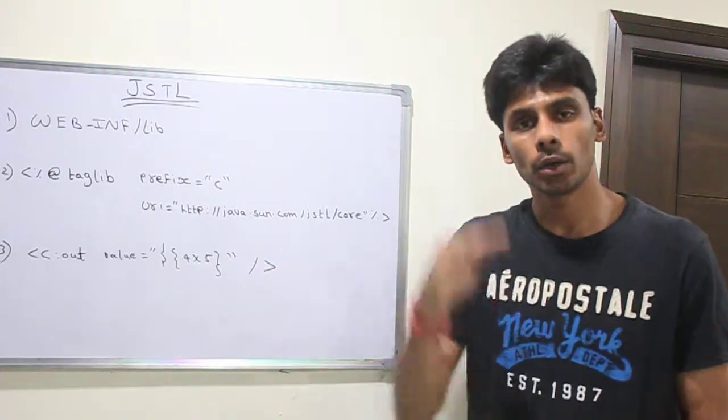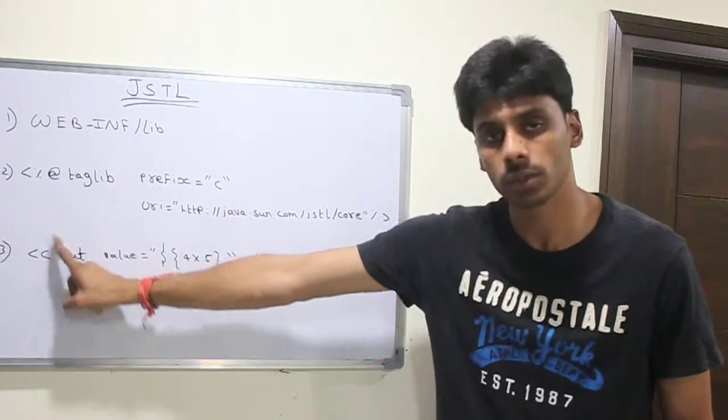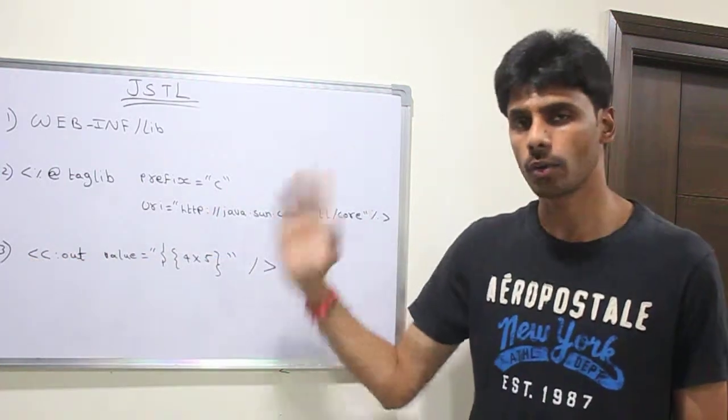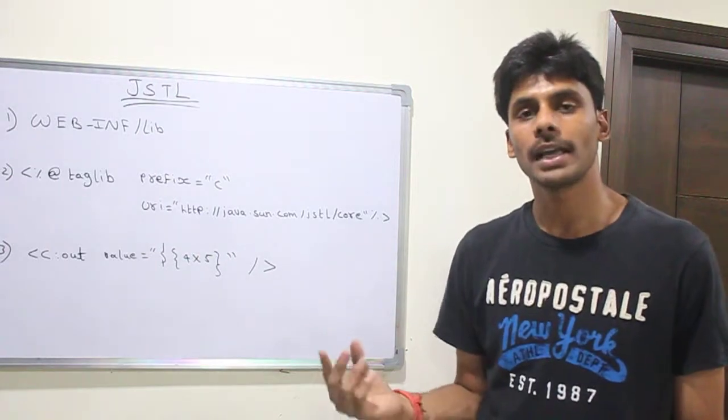Then use the taglib directive on the top of your JSP page. Prefix is whatever you want to use in your JSP. You can have D or whatever. Then the URI is a unique URI. Each taglib library has a URI.